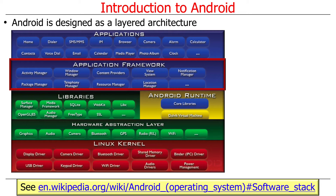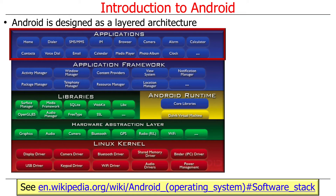A lot of the stuff in the layer underneath is a bit more generic — there's Android-centric stuff there too, of course, but the application framework layer is really Android-specific. And then finally we have all the various applications, or apps. These include things like your browser, email, calendar, phone dialer, and so on — those are all apps.